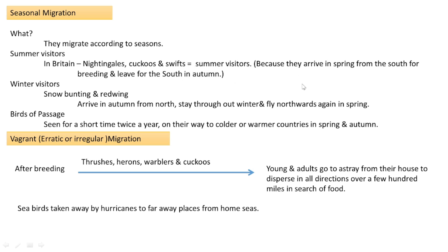Summer visitors arrive during the spring season from the south. Spring is the climatic period between winter and summer — not very cold, but gradually getting warm. It is an optimal period for plants to bloom and for breeding. During spring these birds come from the south, and by the arrival of autumn they leave again to their native place in the south.